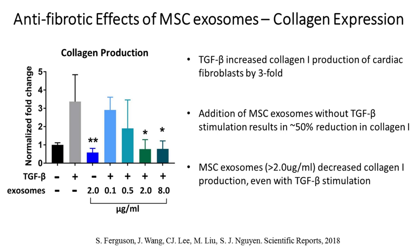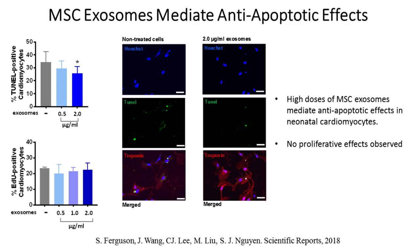Next, we were interested to see if MSC exosomes also mediate anti-apoptotic effects in cardiomyocytes, or if they can even induce cardiomyocyte proliferation. We performed a TUNEL assay and found that with higher concentrations of MSC exosomes, we were able to inhibit apoptosis in neonatal cardiomyocytes by about 10%. However, when we tested for proliferation in cardiomyocytes, we did not see any effects — no proliferative effects were observed.